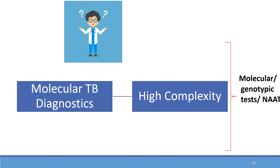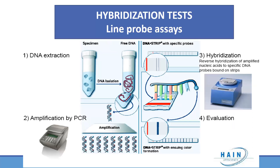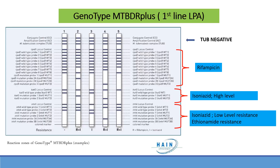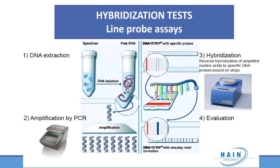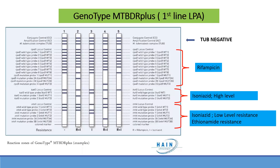Regarding molecular TB diagnostics as a high complexity test — it is a molecular genotypic test and a hybridization test involving DNA extraction, amplification by PCR, and hybridization. It is called a higher complexity test because you must first separately extract DNA, then perform PCR amplification, then perform hybridization using a reverse blot mechanism. The evaluation is fairly manual and can be subjective.